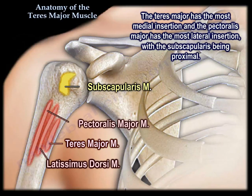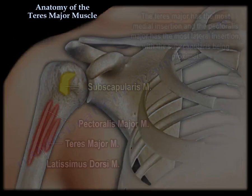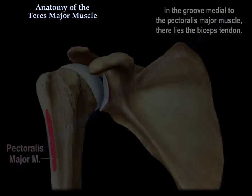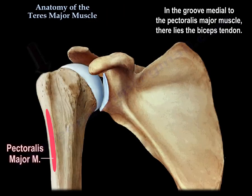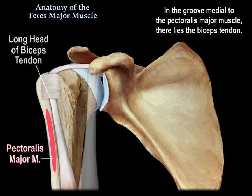The teres major has the most medial insertion, the pectoralis major has the most lateral insertion, and the subscapularis is proximal and in the groove medial to the pectoralis major. There lies the biceps tendon.